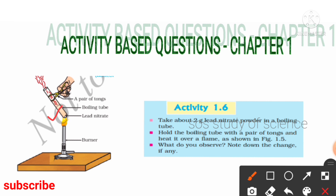What is your observation when you start heating the lead nitrate powder? Lead nitrate powder is white in color. When we heat it, we can observe brown fumes coming out of the test tube. The next question is: what are these brown fumes, and what are the products released when lead nitrate is heated?